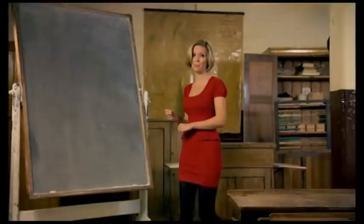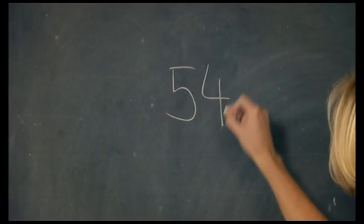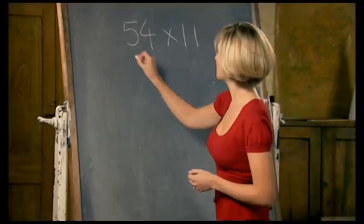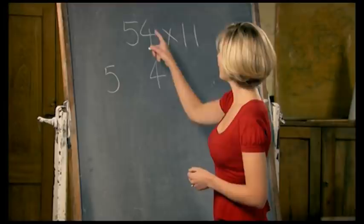First up, here's an easy method for multiplying any two-digit number by 11. So we'll start with 54 times 11. If we put the 54 times 11 here, and then what you do, if you split the digits, so you put the 5 at this end, the 4 at this end, and in the middle, 5 plus 4 is 9, 594.